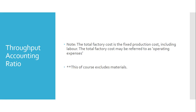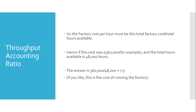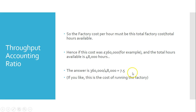The total factory cost is the fixed production cost including labor — and this excludes materials. In the exam you're typically given the total factory cost. We'll see examples where you're not and will need to add up all the factory costs individually, then divide by the total available hours. In this scenario, total available hours are 48,000. With a factory cost of 360,000, the cost per factory hour is 360,000 ÷ 48,000 = 7.5.